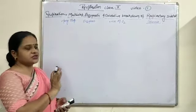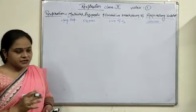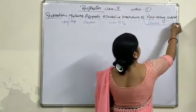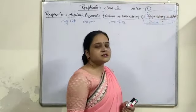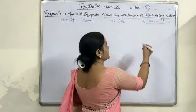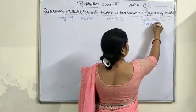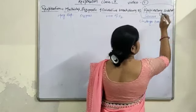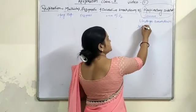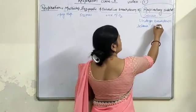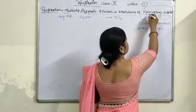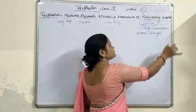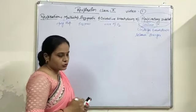This is the general equation for respiration. The respiratory substrate is the substrate which undergoes breakdown, and due to this breakdown it releases energy. This compound is known as the respiratory substrate, and the most common respiratory substrate is glucose.